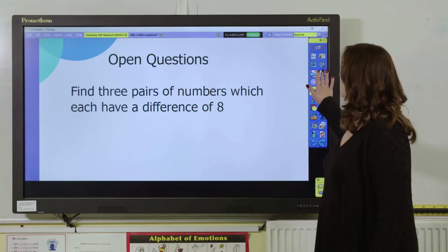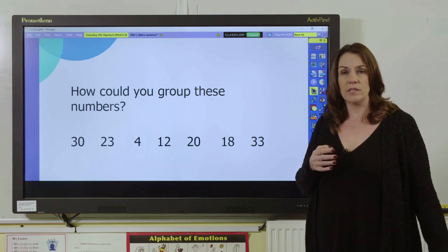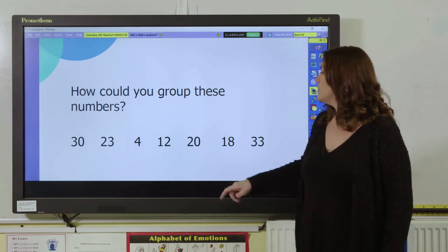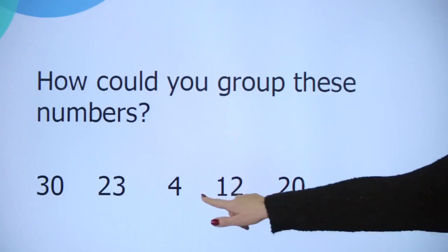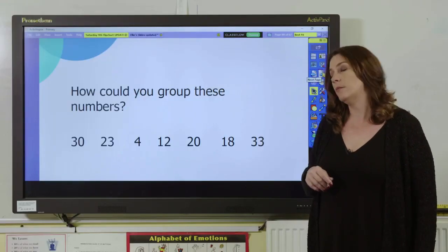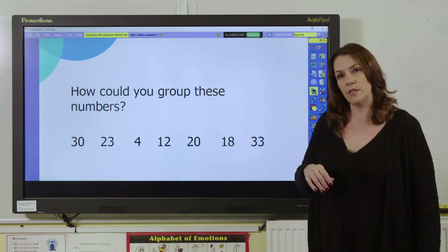Let's have a look at another example. Here you could ask pupils how to group these numbers together and children can do this in a variety of ways. For example, they might group them as multiples of 4, so we could have 4, 12, and 20. They might choose the ones that have two tens in them, such as 20 and 23. There are lots of different solutions.